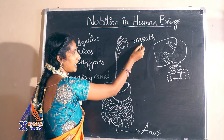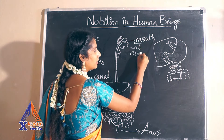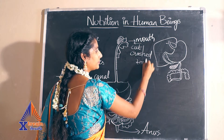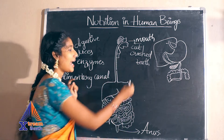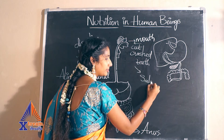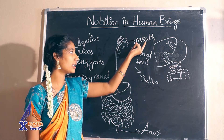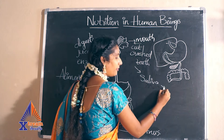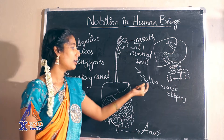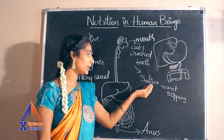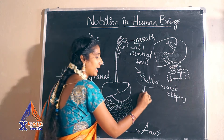The food which we take through our mouth is cut and crushed by our teeth and mixed with saliva, making it wet and slippery. The saliva present in our mouth mixes with the crushed food. This saliva is produced in the mouth by the salivary glands.